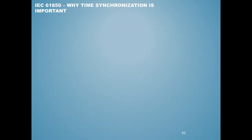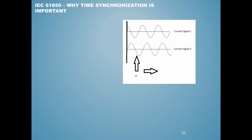Why is time sync important? Consider a current signal from the same source seen by two merging units. If they are not time-synced, their time references will be off, simulating that their phases are offset — when in reality it's the same exact signal. This is because each merging unit is on a different time reference, resulting in a delta in phase.